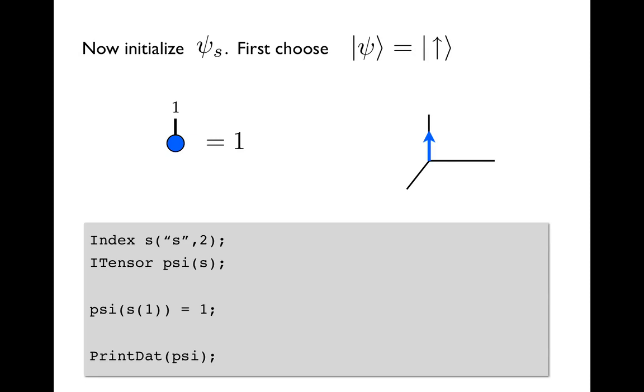So again, s of one means s set to the value one, plug that into psi to access its first component, and set that to one.